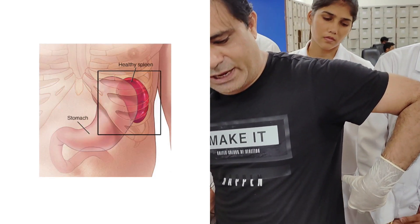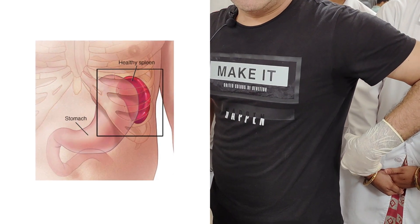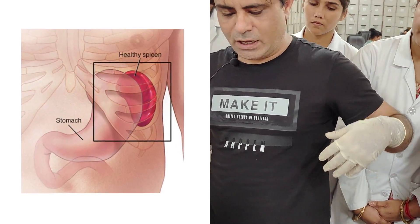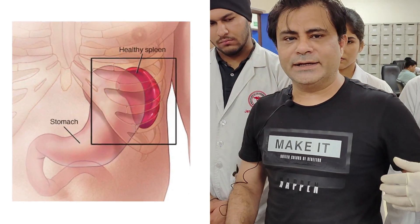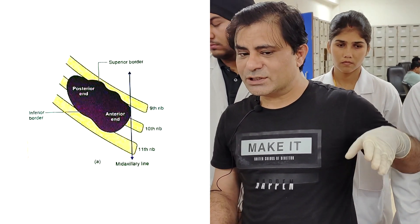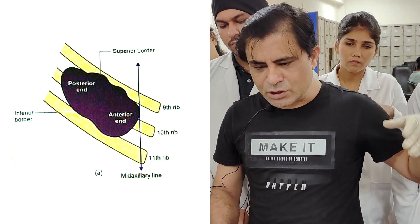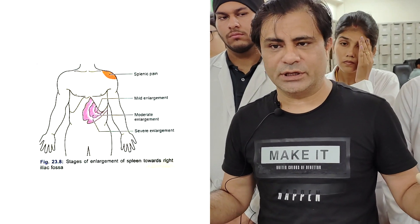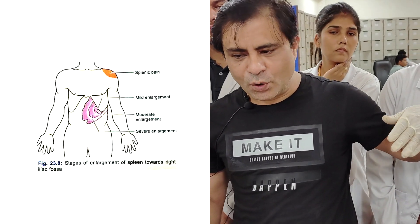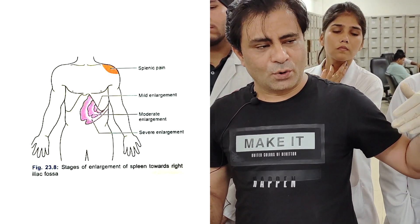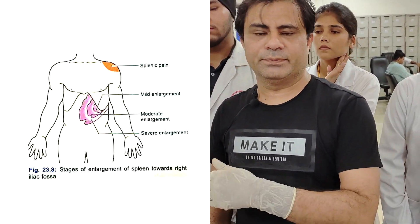In cases of splenomegaly, the spleen lies here in the loins. It lies behind the stomach along the 9th and 11th ribs, because the longitudinal axis of the spleen is along the 10th rib. So in case the spleen enlarges — splenomegaly hoti hai — the spleen actually grows gradually along its longitudinal axis, meaning the spleen grows along the axis of the 10th rib.